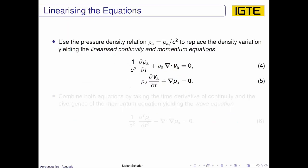So we use then the pressure and density relation as outlined before to replace the density variation, yielding the linearized continuity and the momentum equations which we have here, equation 4 and 5.